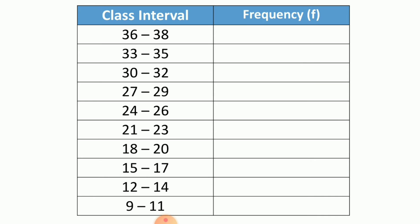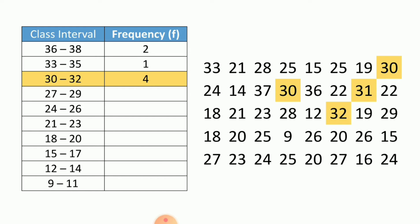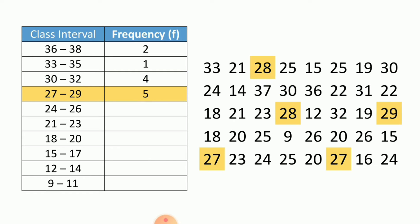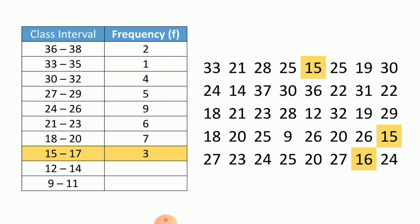Next is to find the frequency by means of tallying. We find how many times the numbers in each class interval appear. Class interval 36 to 38 appeared twice; 33 to 35 has a frequency of 1; 30 to 32 has 4; 27 to 29 has 5; 24 to 26 has 9; 21 to 23 has 6; 18 to 20 has 7; 15 to 17 has 3; 12 to 14 has 2; and 9 to 11 has 1.